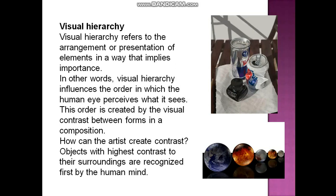Visual hierarchy refers to the arrangement or presentation of elements in a way that implies importance. In other words, visual hierarchy influences the order in which the human eye perceives what it sees. This order is created by the visual contrast between forms in a composition. Objects with the highest contrast to their surroundings are recognized first by the human mind.